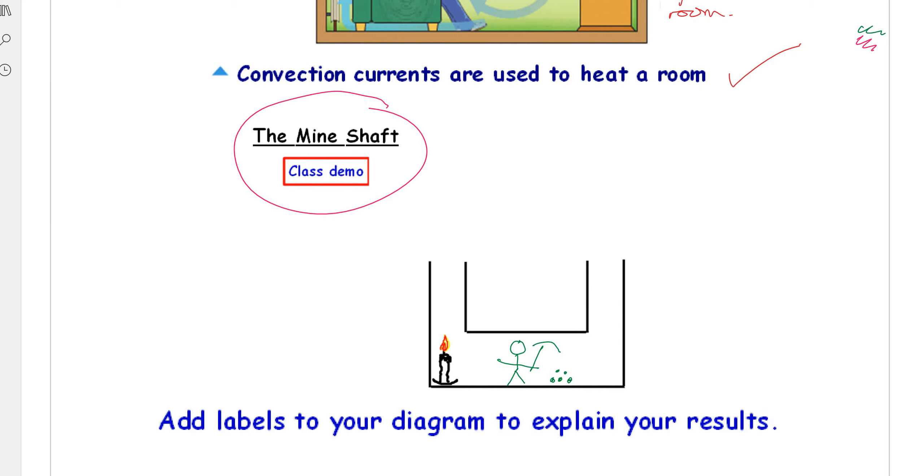But in actual fact, it generates convection currents. So the air particles close to the fire heat up, gain more kinetic energy, rise because they are less dense, and out they go.